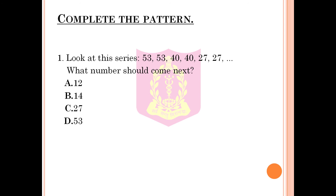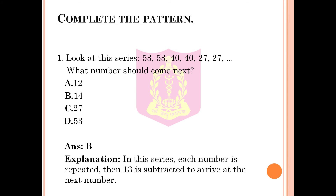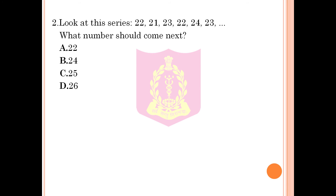The next topic under Logic and Reasoning is complete the pattern. Question 1: Look at this series: 53, 53, 40, 40, 27, 27. What number should come next? Option A: (unlisted), Option B: 14, Option C: 27, Option D: 53. The correct answer is Option B, 14. Explanation: In this series, each number is repeated, then 13 is subtracted to arrive at the next number.